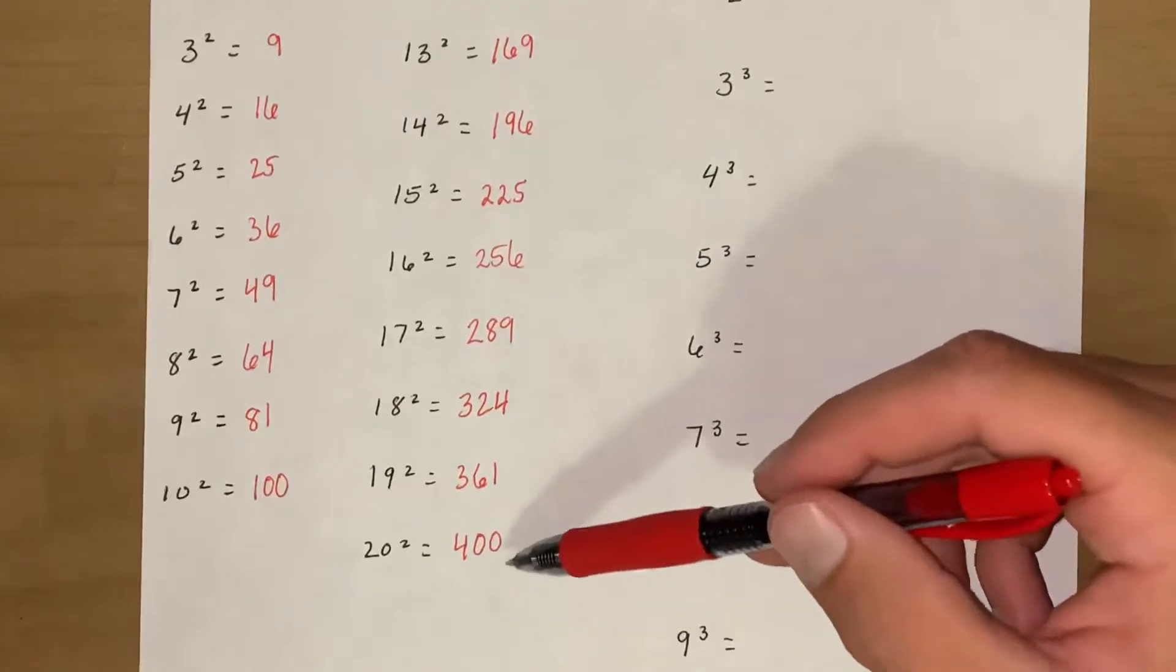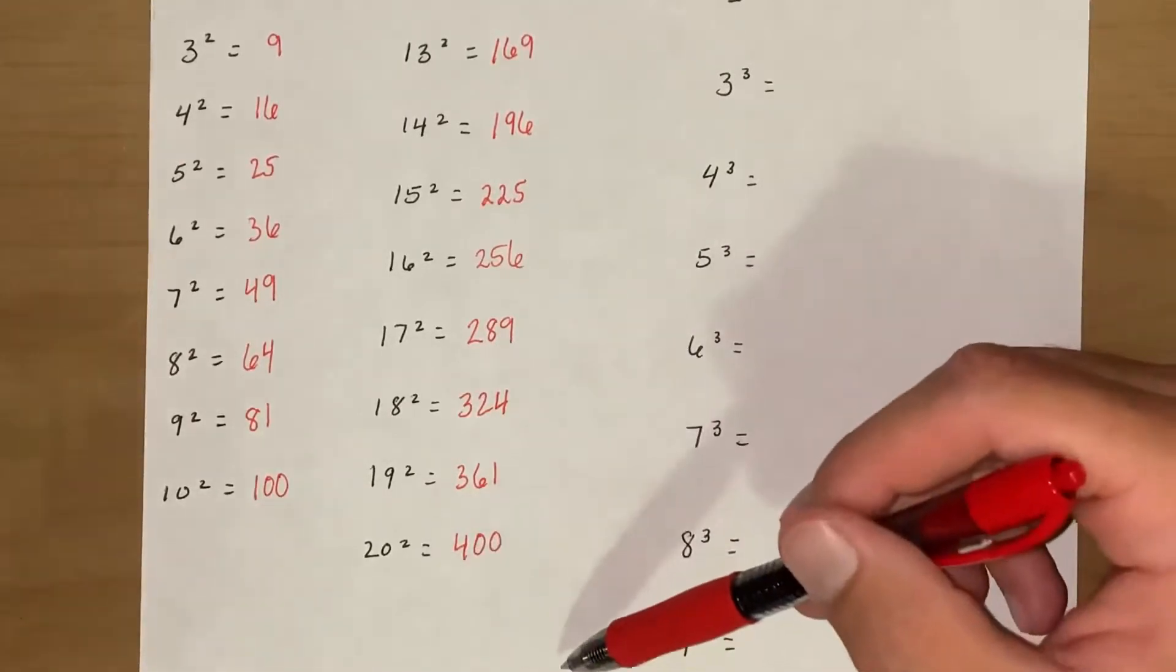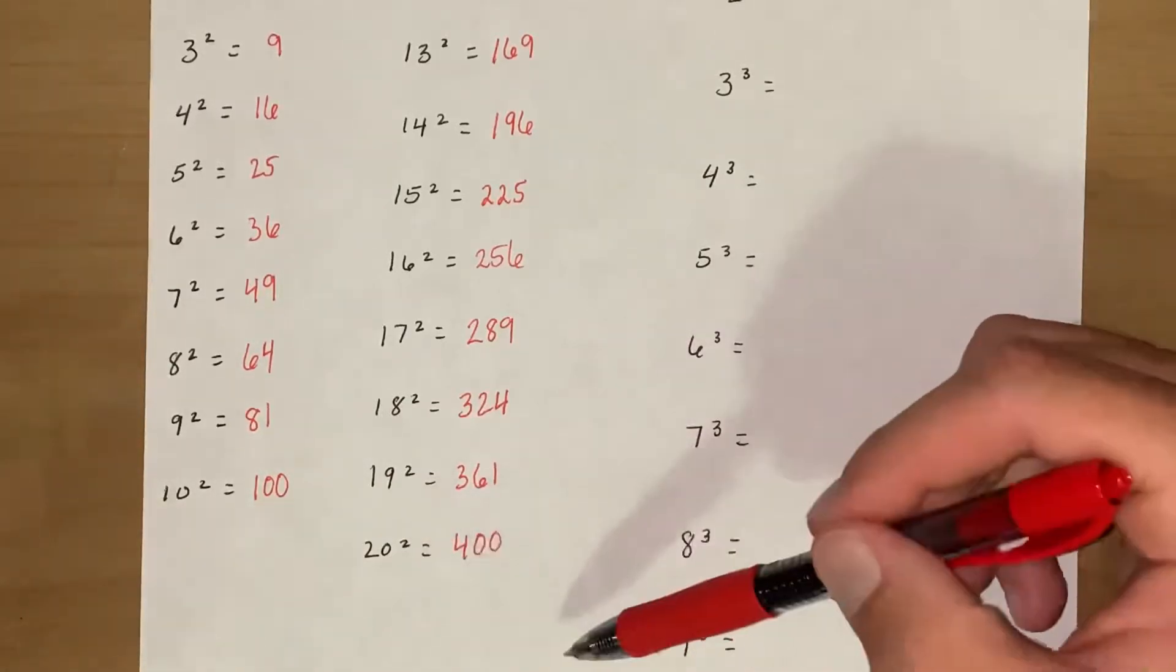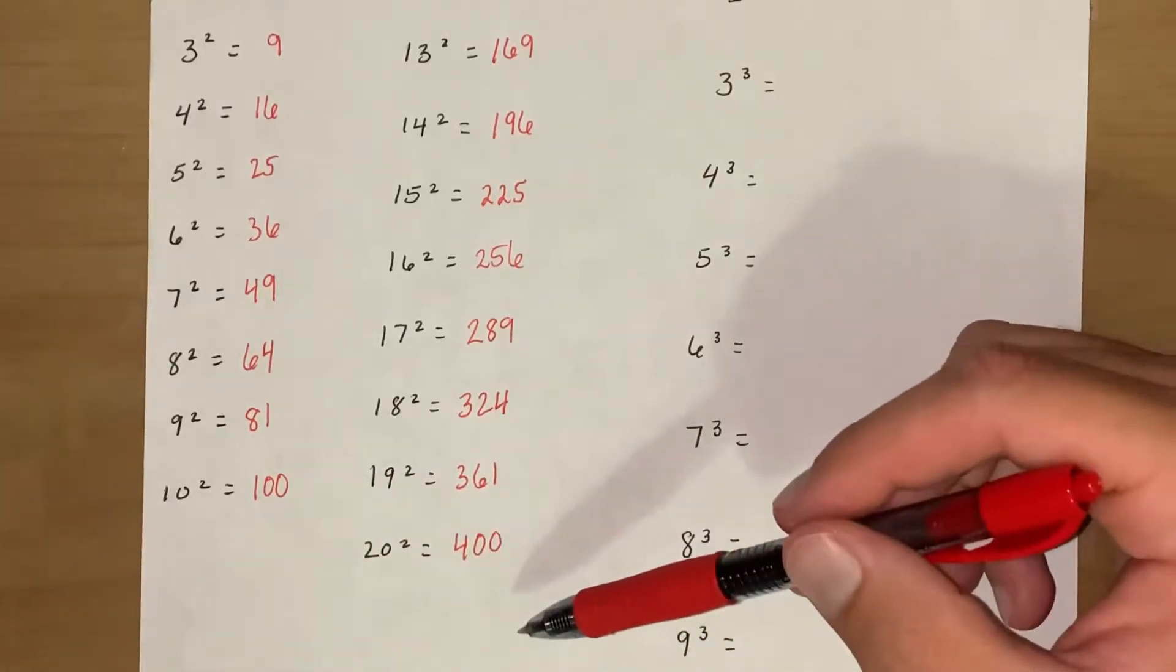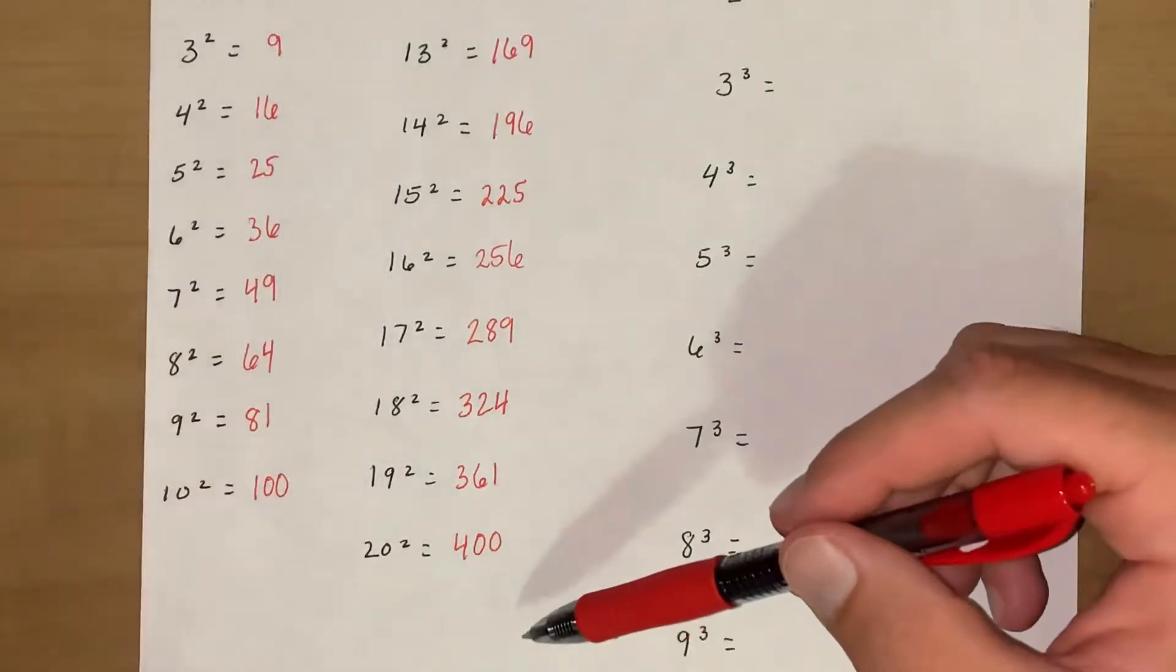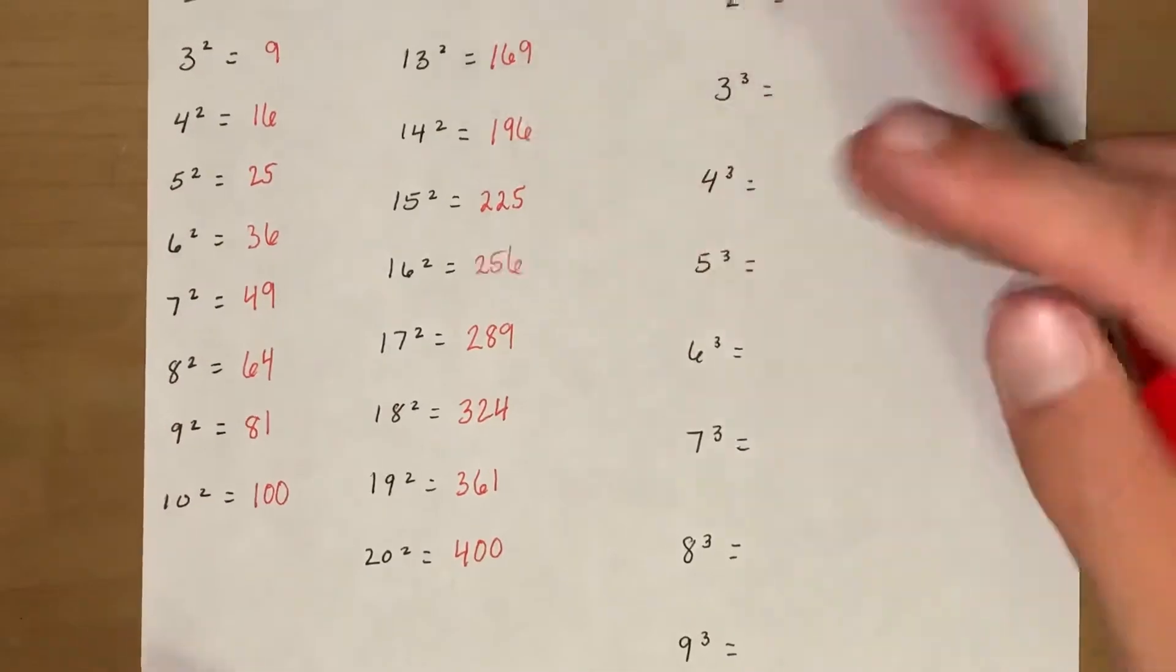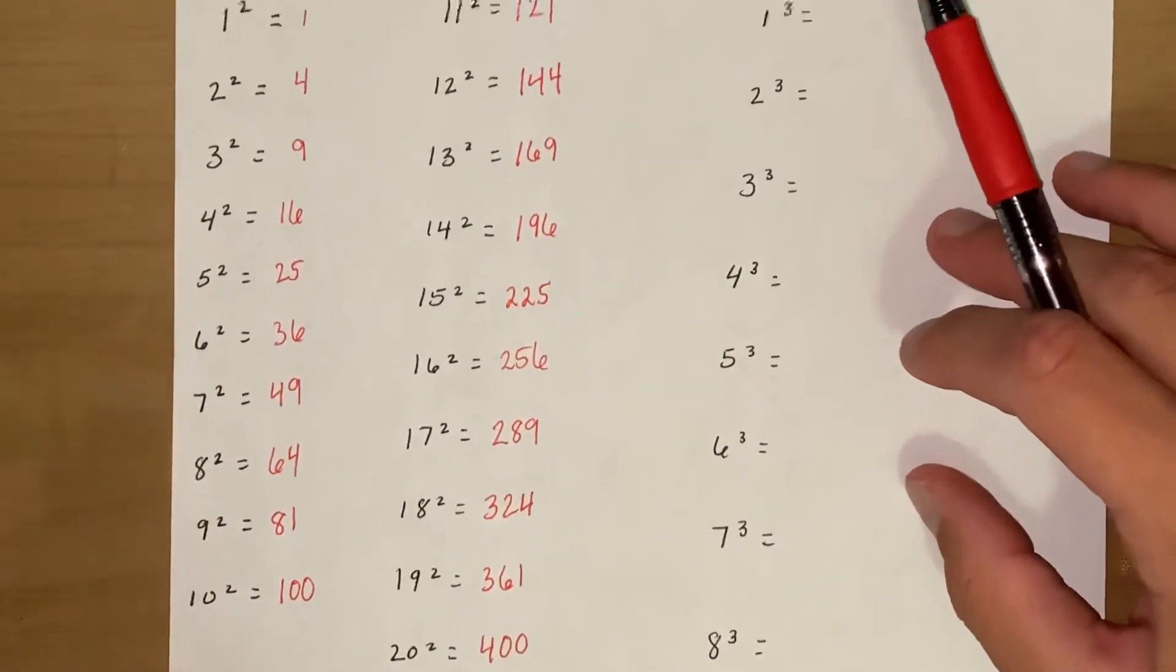And then 20 squared is 400, so that's 20 times 20. When we have zeros on the end of our numbers we're trying to multiply, we can just do 2 times 2 is 4, and then we have two zeros. So 4 and add two zeros to the end. So those are our perfect squares you need to memorize, 1 through 20.